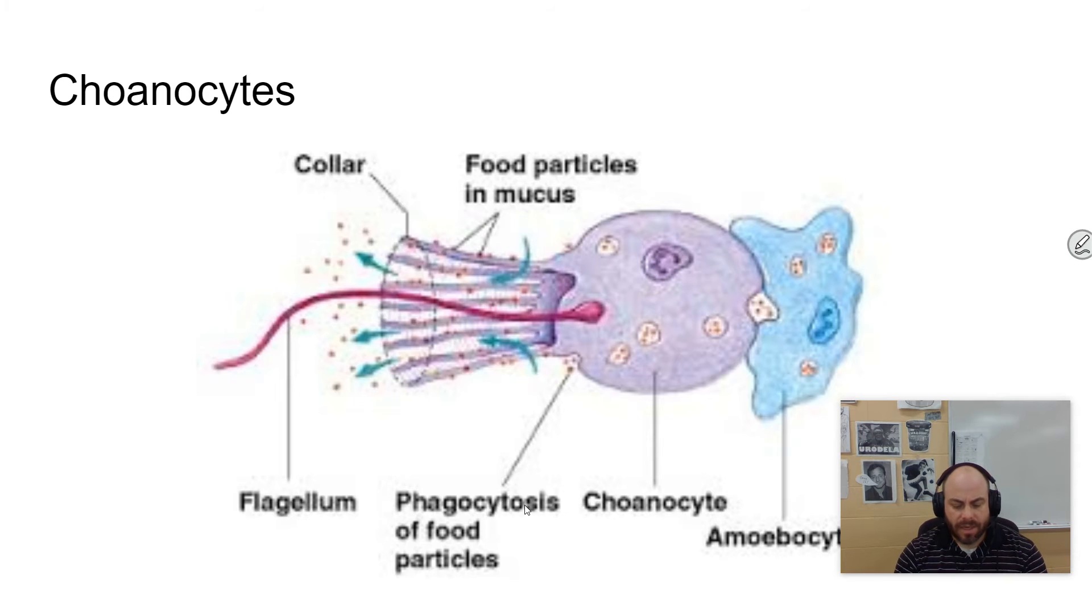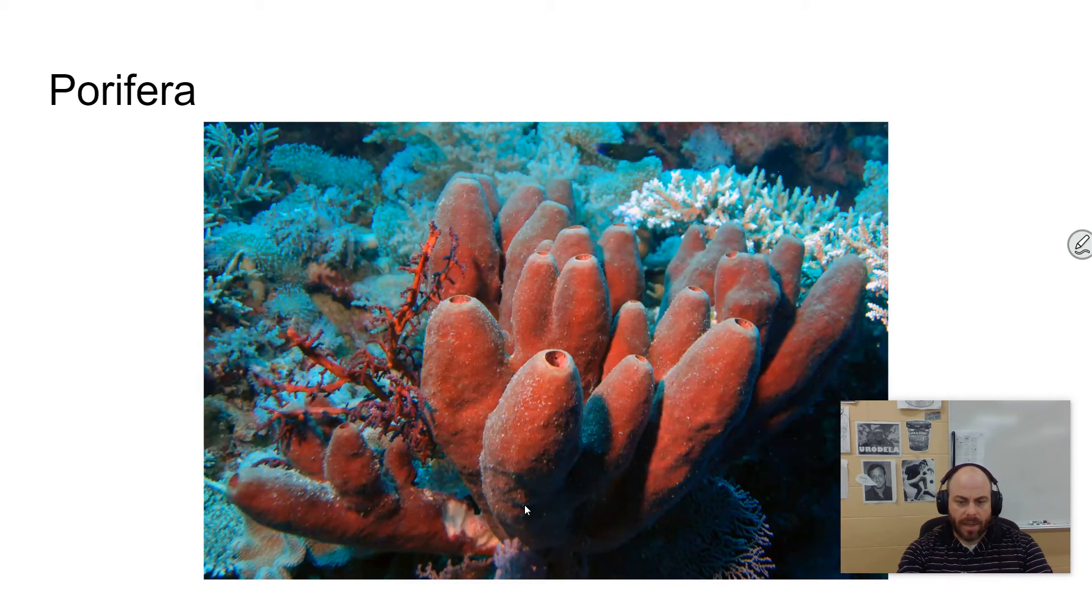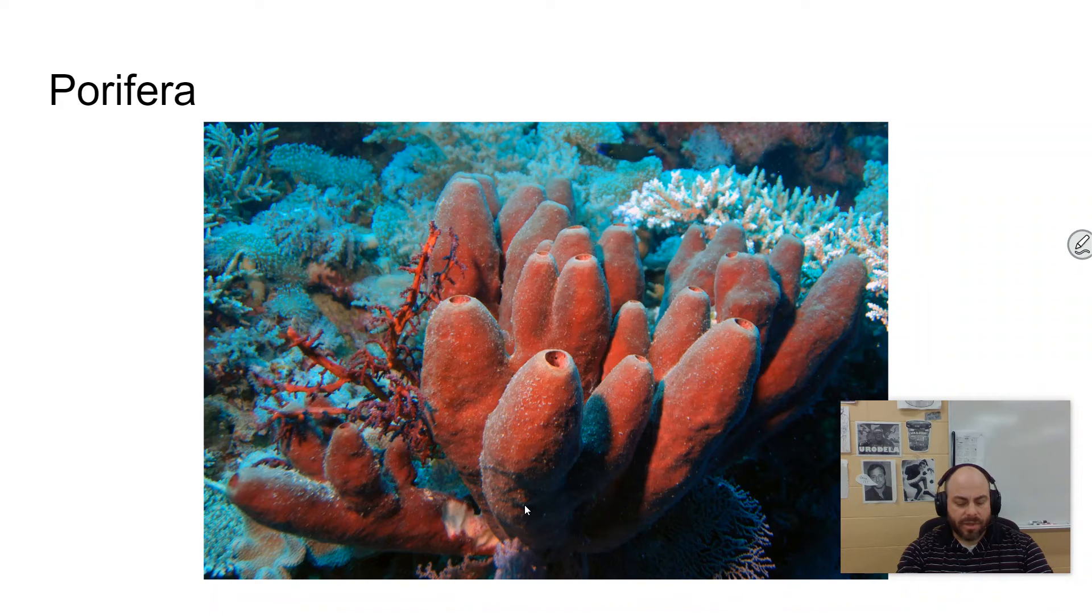So these cells, choanocytes, are the flagellated cells that were similar to the choanoflagellates, and these are the cells that cause that current of water to go through their body. And again, we will talk more about them, but this is one of the claims to fame of sponges is that they have these specialized cells. They don't have a lot of specialized cells. In fact, they just are very simple, very simple organisms with not even true tissues, but they do have these specialized cells. Also, sponges are asymmetrical. They do not have any sort of body symmetry to speak of, which makes them, again, very simple.